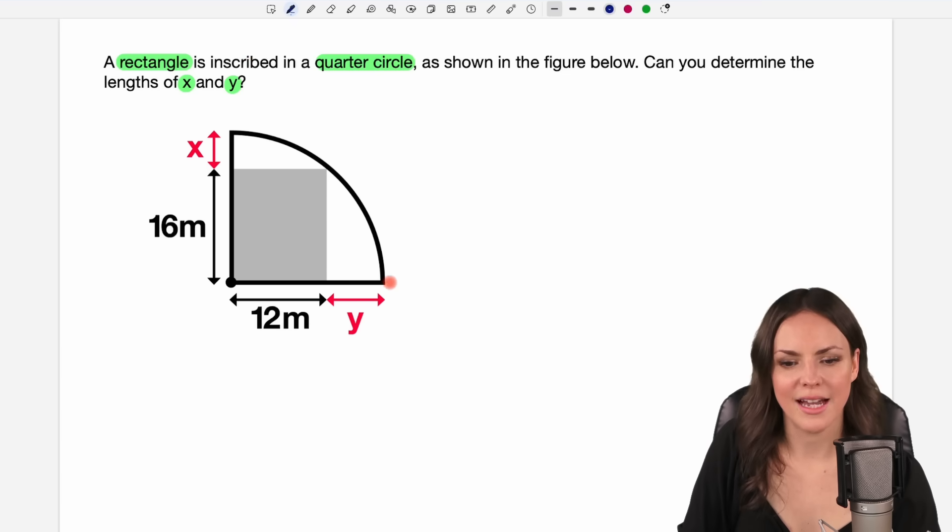This is our quarter circle. We have the center of our quarter circle here and in this quarter circle we have this gray rectangle. We get the length of one of the sides of the rectangle by 12 meters and also the length of the other side by 16 meters.